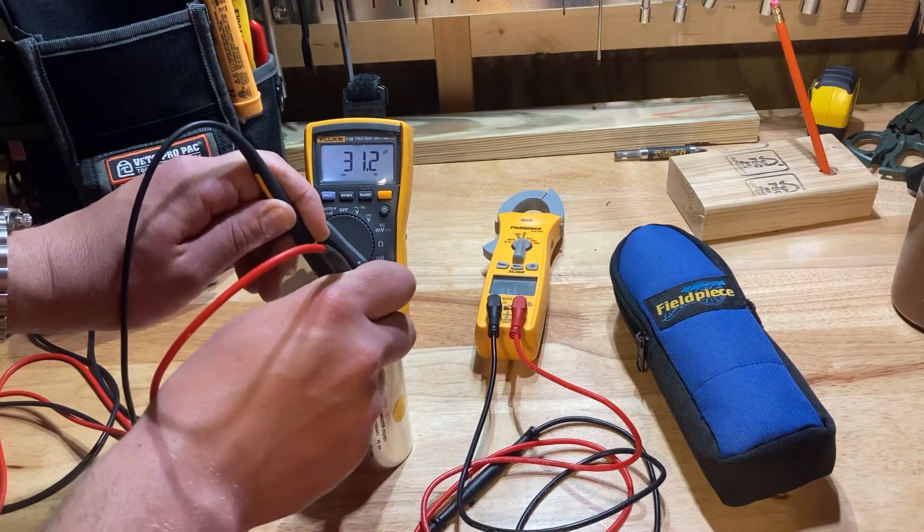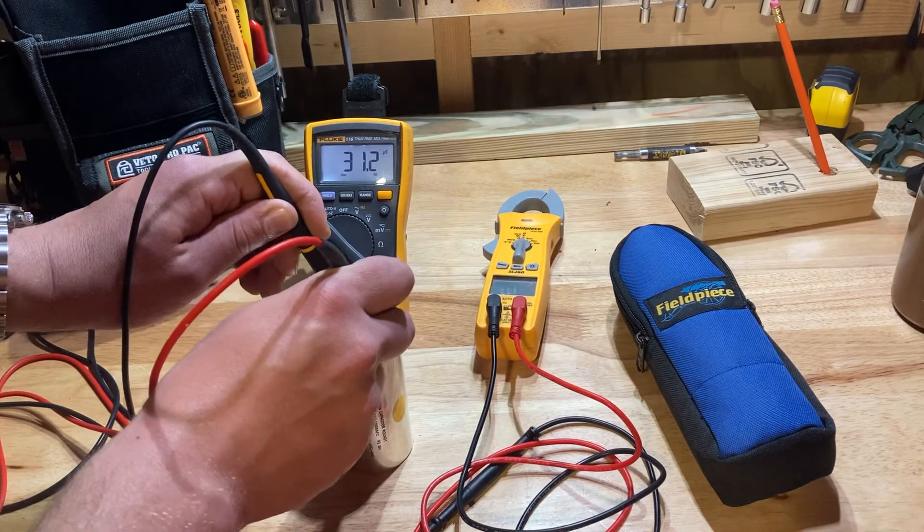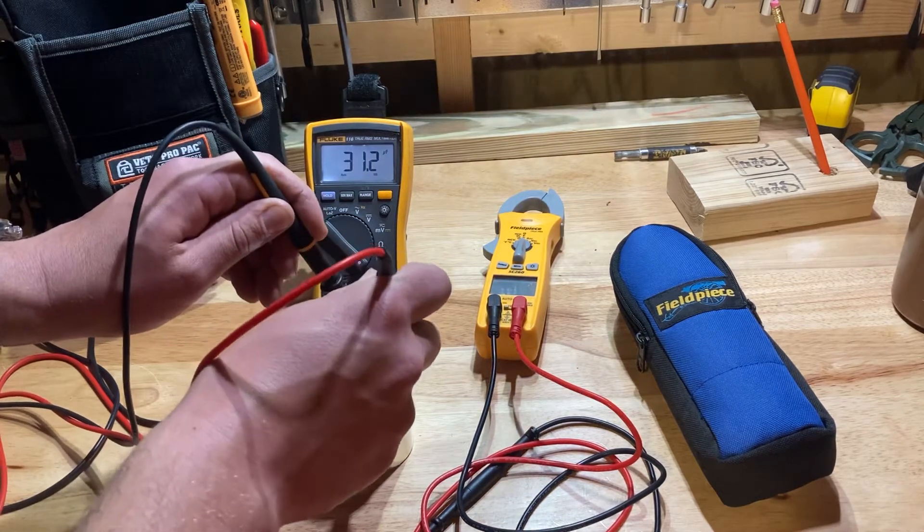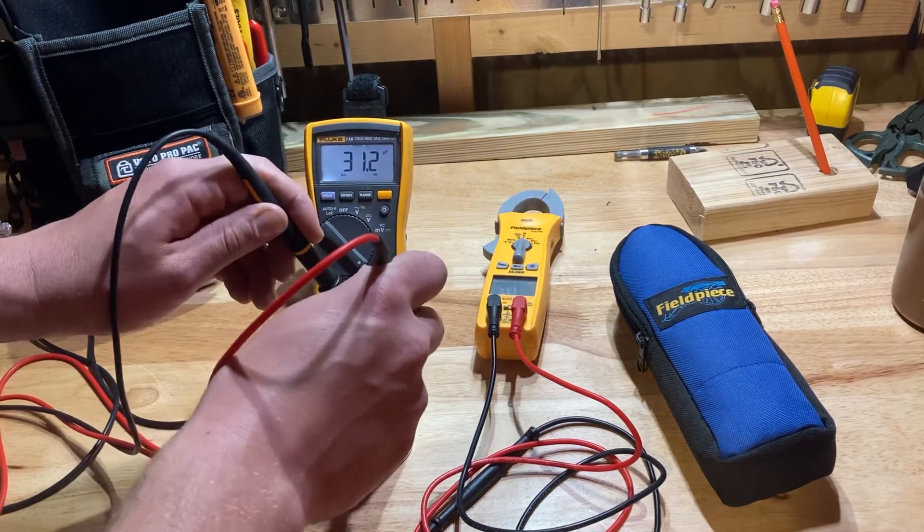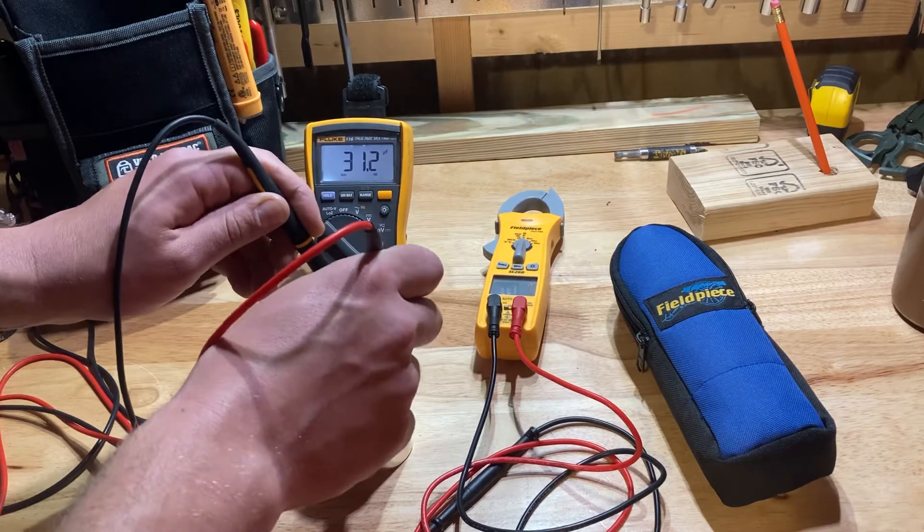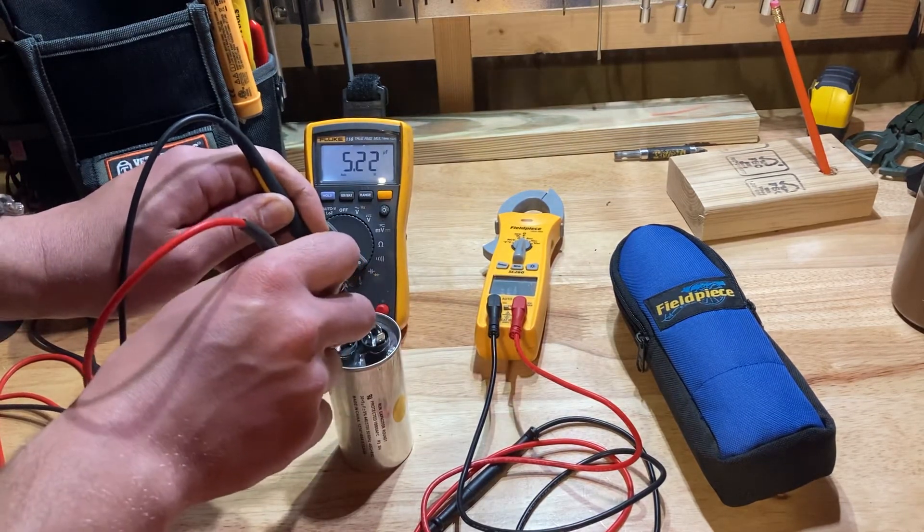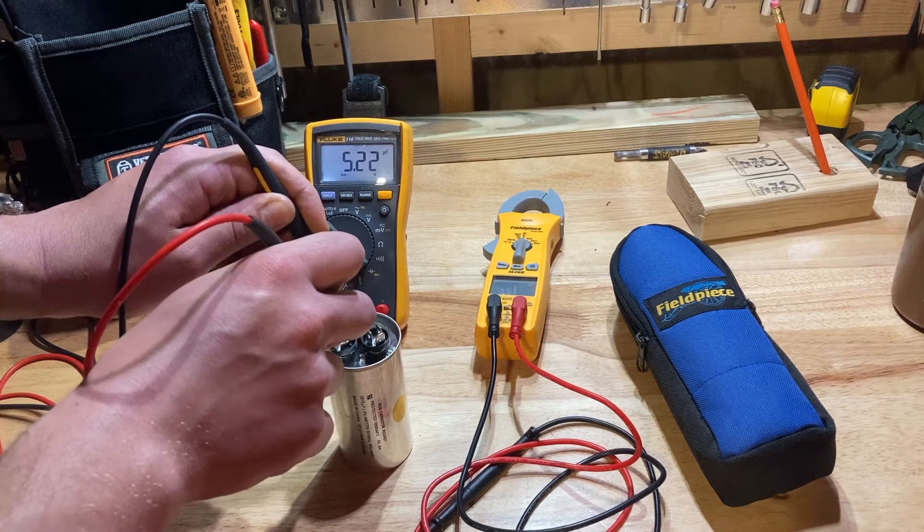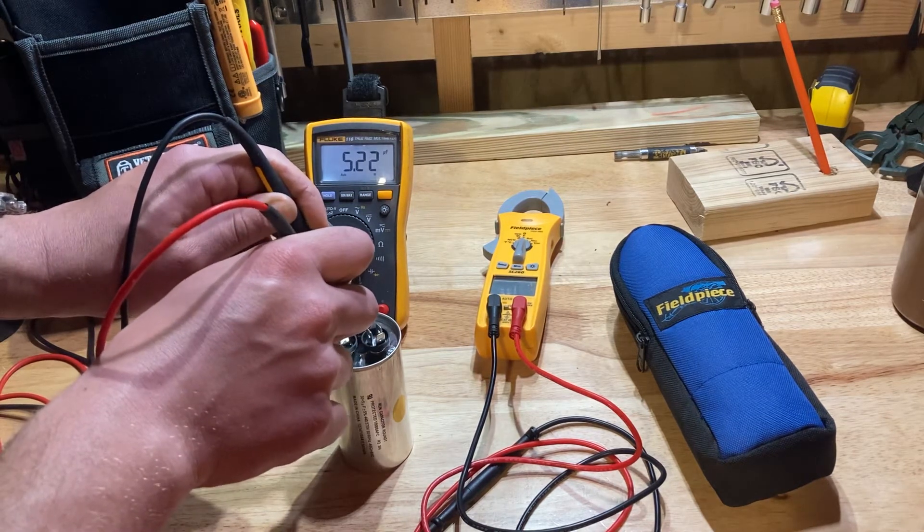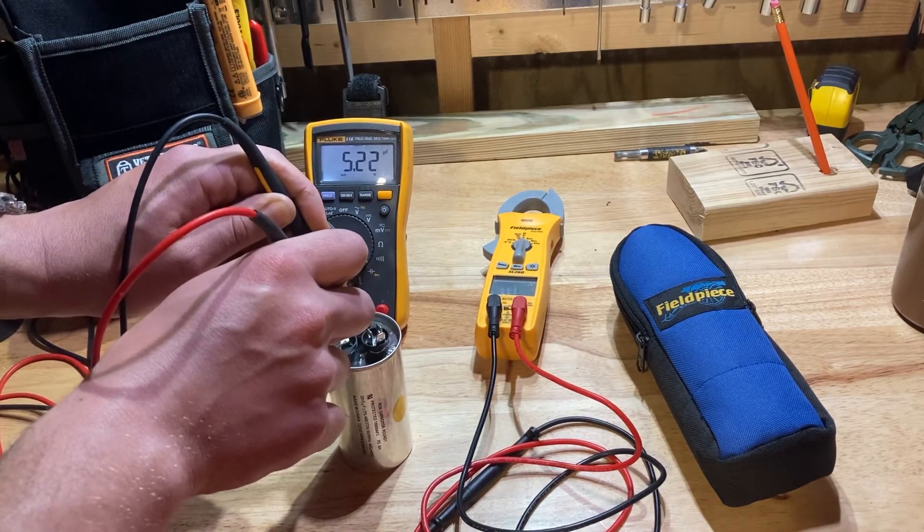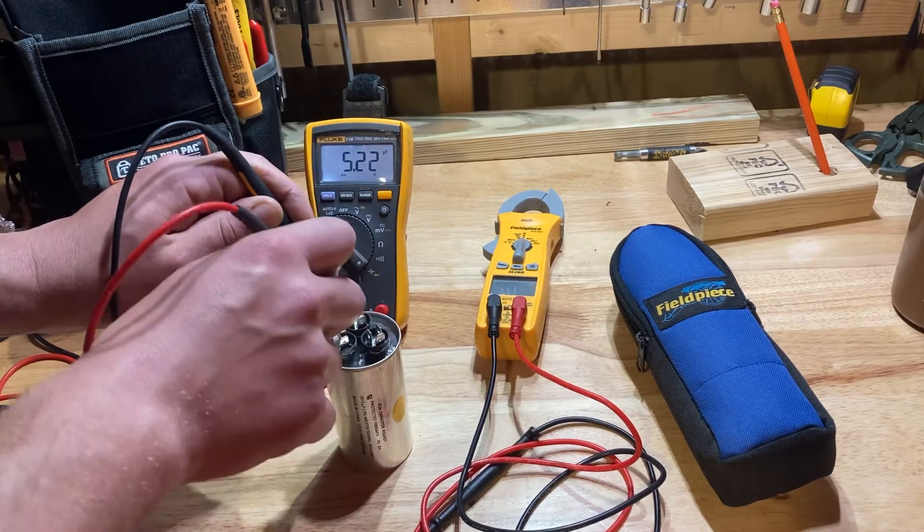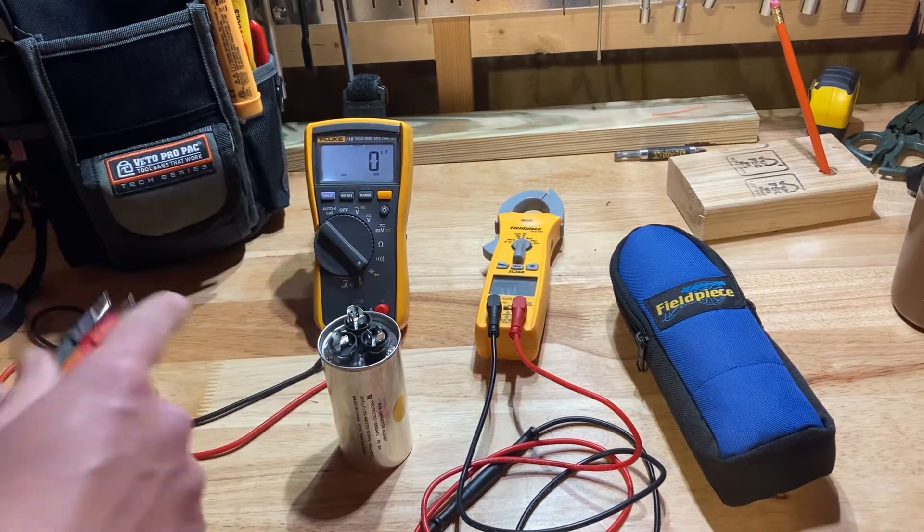You see how fast and non-glitchy that went? 31.2. So this is good. This is a new capacitor, so it should be good. Then we're going to go common to fan. 5.22. So we're good. And the numbers don't jump around. Everything is right on the money. It never changes. It's just perfect. I mean, it just tells you exactly what you want it to tell you.